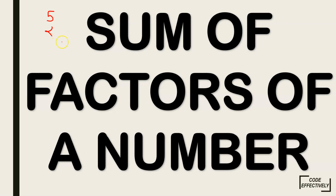If the given number is 5, we know that 5 is divisible by 1. We have to find the sum of the factors which are less than 5. So we can say that the sum of the factors of the given number 5 is only 1.